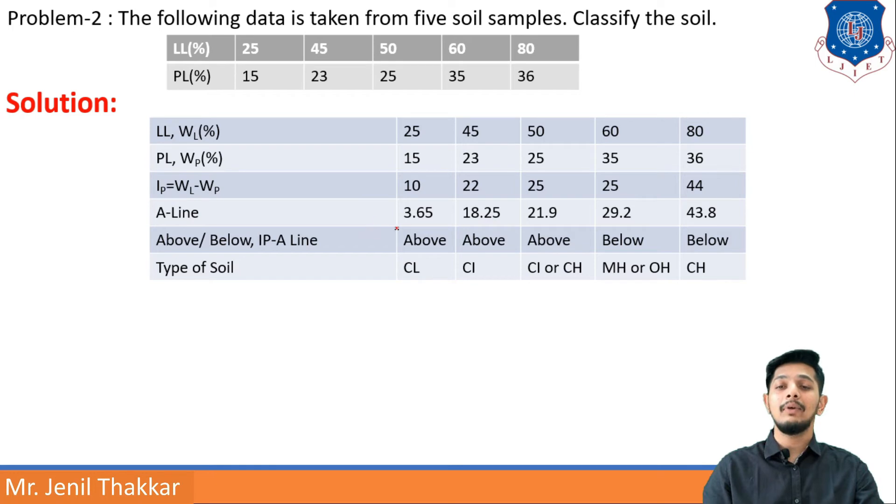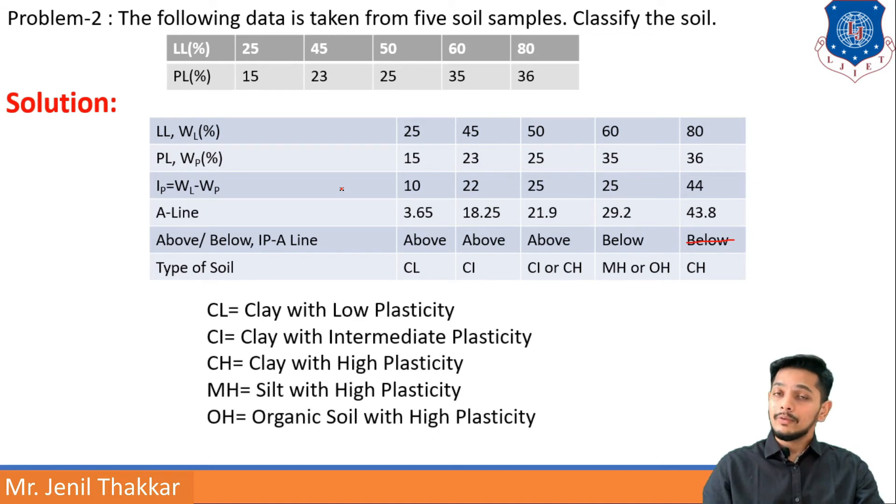Let us talk about first case: here A-line equation is 3.65 and my IP is 10, so it is clearly above that. Here A-line equation is 18.25 and it is 22, so again above. 21.9 and 25 IP, then it is above. 29.2 and the IP value is 25, so it is below IP A-line. Again 43.8 and 44, that is above.